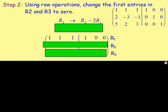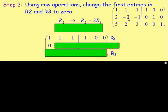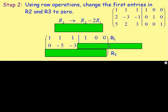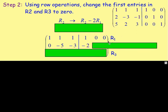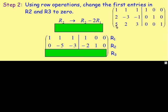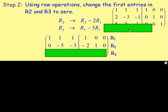If we do that, the top row is going to stay as it is — row 1 will not change. That will stay as 1, 1, 1 and then 1, 0, 0. The second row: if we do 2 take away 2, that gives us 0. We'd also have negative 3 take away 2 times 1, negative 1 take away 2 times 1, 0 take away 2 times 1, 1 take away 2 times 0, and 0 take away 2 times 0. So, this is our new row 2.